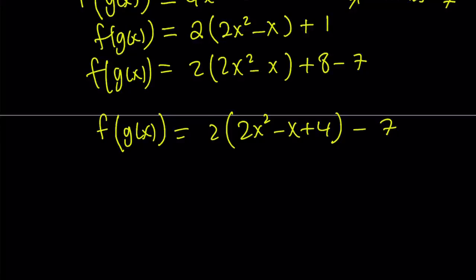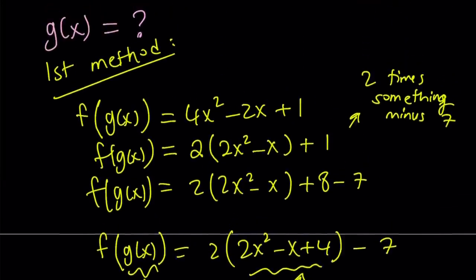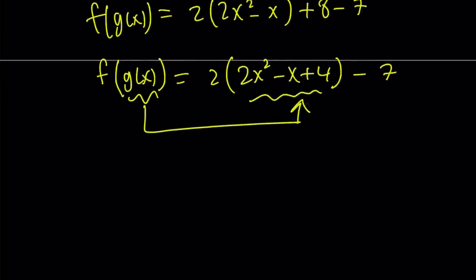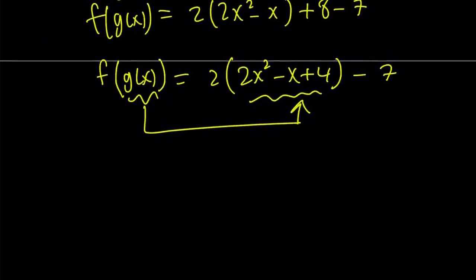Since f is 2 times something minus 7 and this is something, that something is what g(x) is. So automatically you get g(x) from here. You can also look at it this way: f(g(x)) is going to be 2 times g(x) minus 7 and so on and so forth. But the idea is g(x) is 2x squared minus x plus 4.